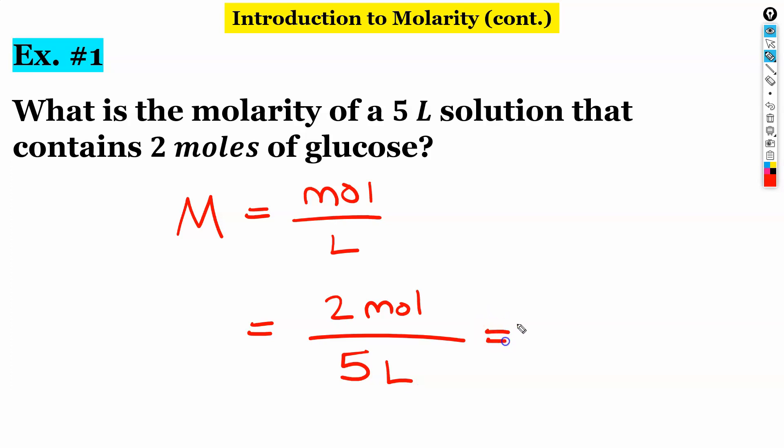2 divided by 5 is 0.4. And our units will be capital M. Now notice I had one sig fig here because there's one sig fig in our 2, one sig fig in our 5. So I would have one significant figure in my answer here.